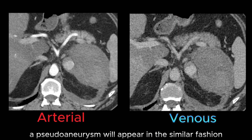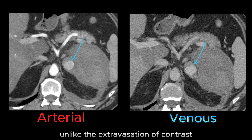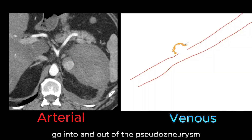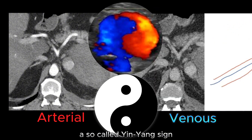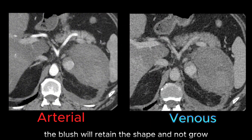A pseudoaneurysm will appear in a similar fashion. However, the form is often round and well demarcated, unlike the extravasation of contrast, since the bleeding is contained. This explains why we can see flow go into and out of the pseudoaneurysm on ultrasound — a so-called yin-yang sign. On the venous phase, the blush will retain its shape and not grow.